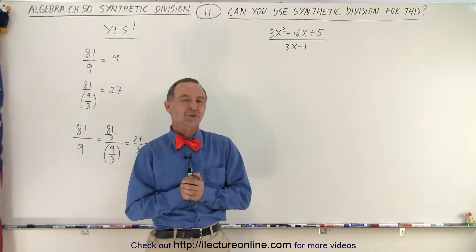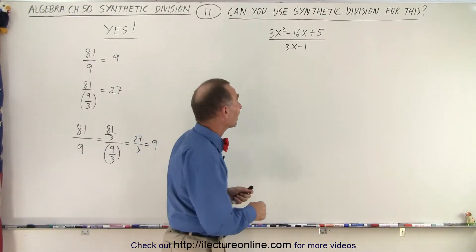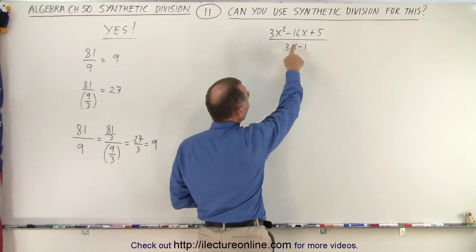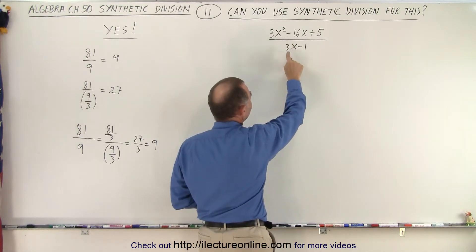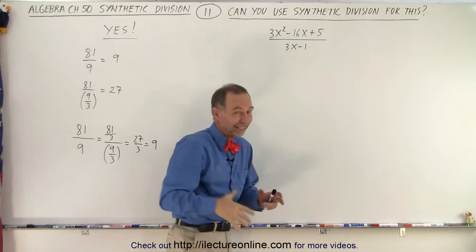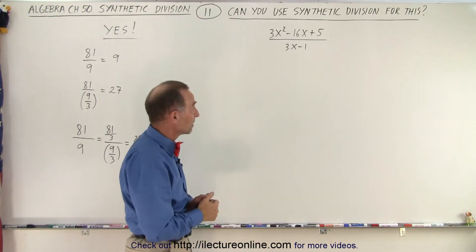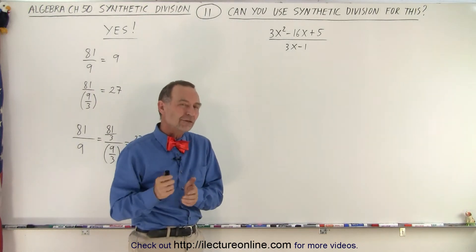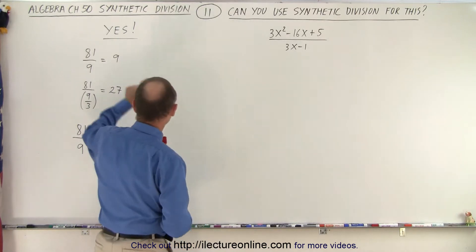Welcome to our lecture online. So what do we do when we see something like this? 3x squared minus 16x plus 5 divided by 3x minus 1, instead of like x minus 1 or x minus 3. Can we still use synthetic division for that? The answer is yes.